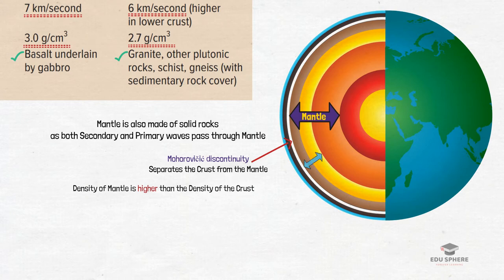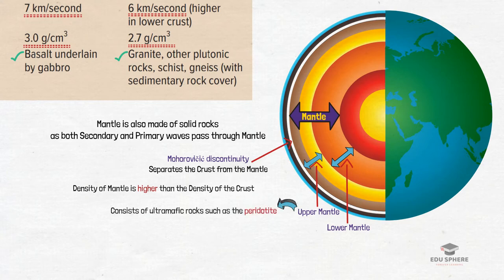The mantle is further subdivided into the upper mantle and the lower mantle. The best hypothesis that geologists can make about the composition of the upper mantle is that it consists of ultramafic rocks such as the peridotite. The crust and the uppermost mantle together form the lithosphere which is considered as the outer shell of the Earth that is relatively strong and brittle.